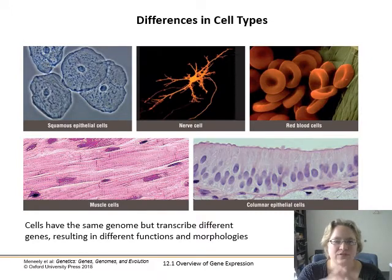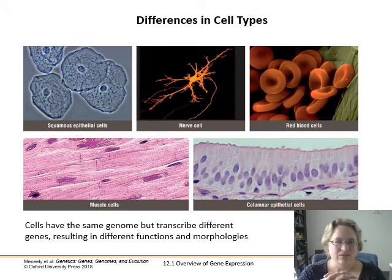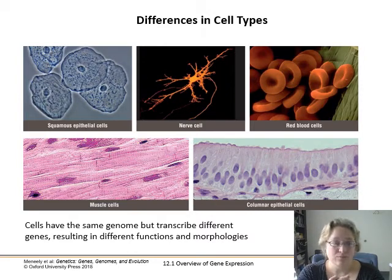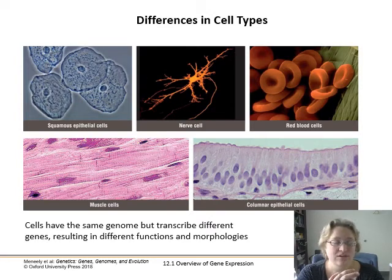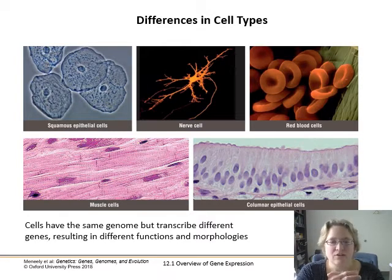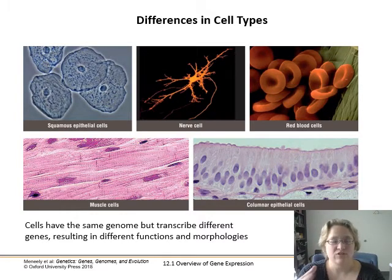Differences in transcription is what's really driving differences in cell types. Every cell in our body has the same genome, but only certain parts of it are expressed or used in different cell types. This is mainly based on whether or not genes are transcribed — whether or not the process of gene expression actually starts via transcription.